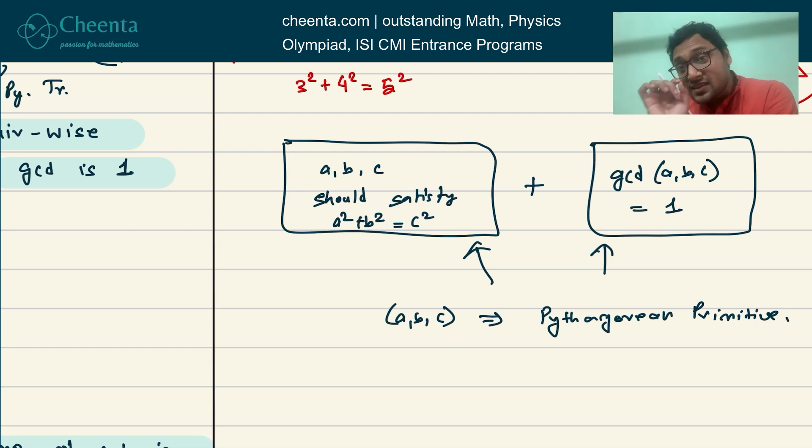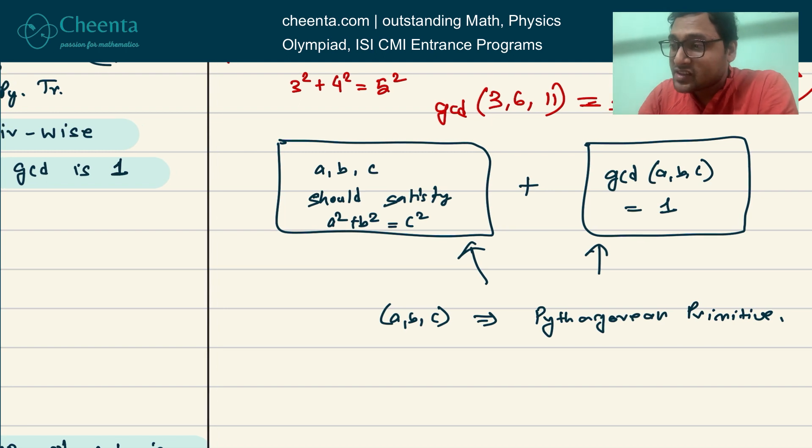There is a very interesting problem in this context. If the GCD of A, B, C is 1, that does not automatically imply that their pairwise GCD will also be 1. For example, 3, 6, and 11 have GCD 1 because the largest number that divides all three of them is 1. But their pairwise GCD is not 1, because GCD of 3 and 6 is 3. The largest number that divides both 3 and 6 is 3. So in general, it is not true that if GCD of three numbers is 1, then their pairwise GCD will also be 1.